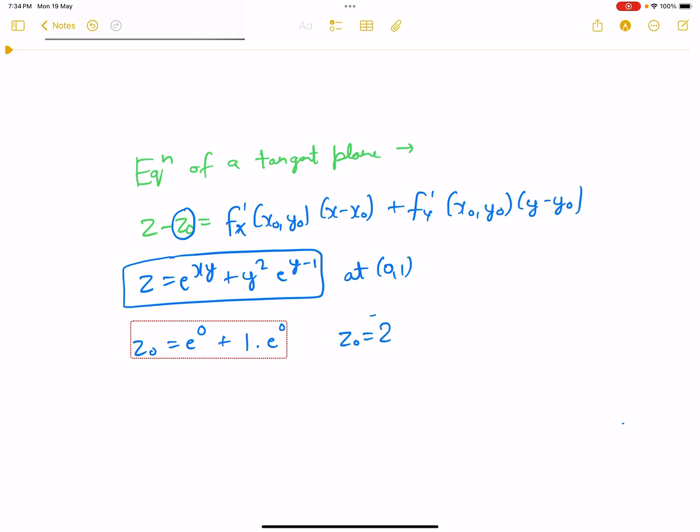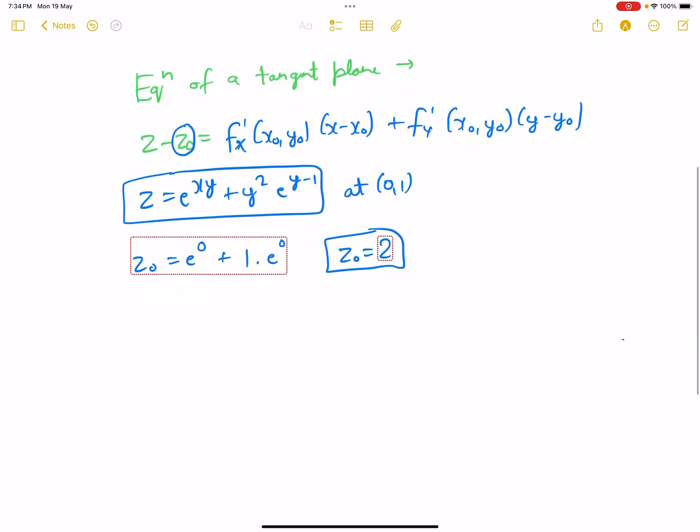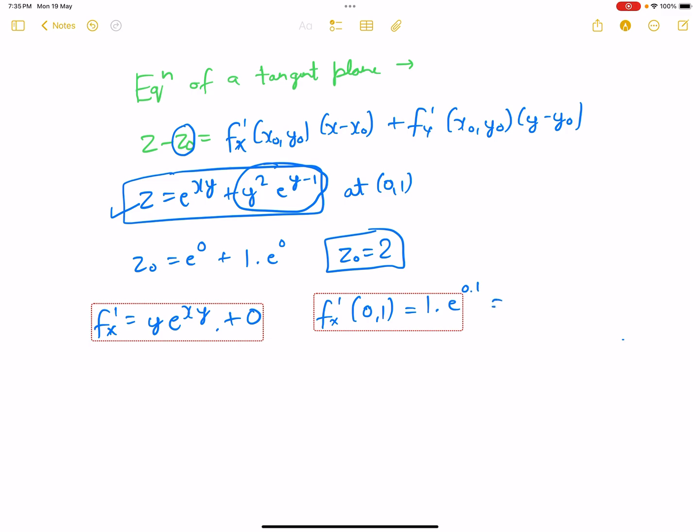So z₀ is coming out to be 2. Now f'ₓ - differentiating this with respect to x, e to the power xy, the derivative of xy would be y only. This term does not have any x element so this is 0. f'ₓ at (0,1) would be 1 into e to the power 0 into 1 which is 1.